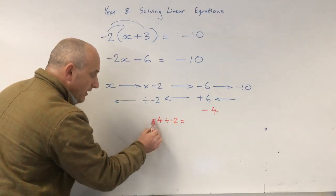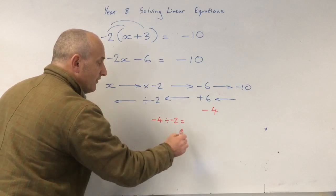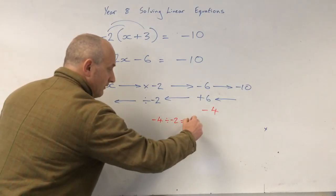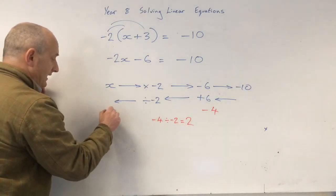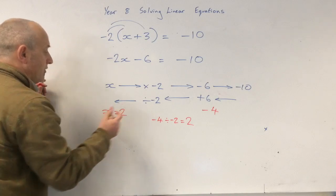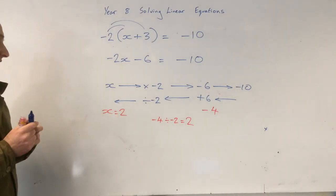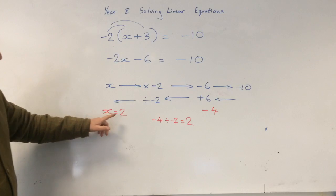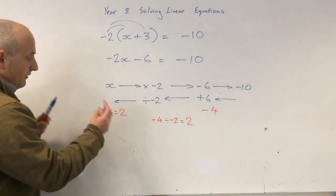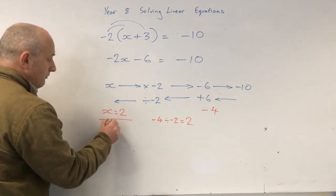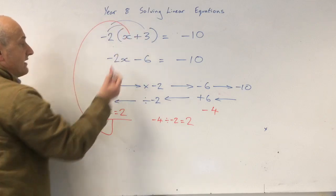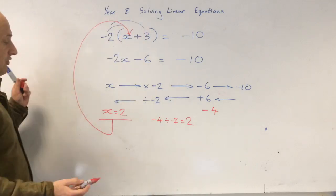Remember, a negative divided by a negative is a positive. So x equals 2. So x equals 2. And if I think about this, if I think about this, if I plot this x equals 2 back into here. Let me just think. Hang on.